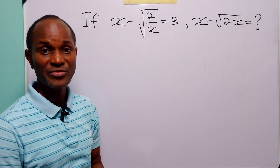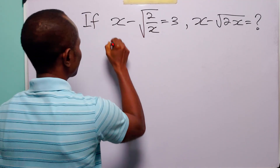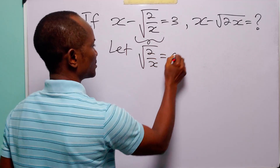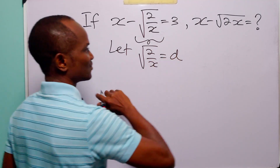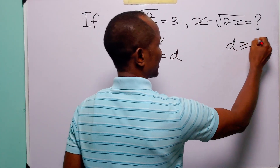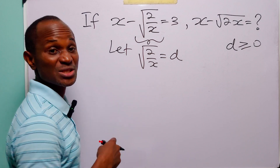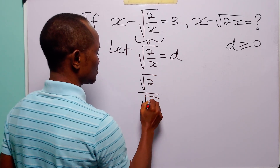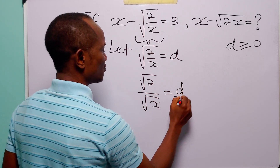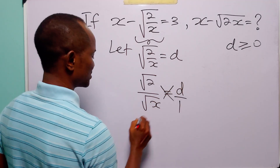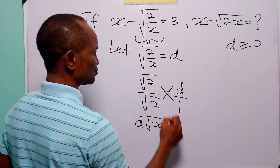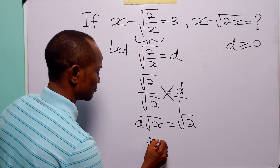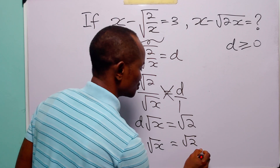To solve this equation, we are going to start with a simple substitution. Let this quantity — that is root 2 over x — be equal to d. This comes with the condition that d must be greater than or equal to 0, because a square root must be positive. We can write root 2 over x as root 2 over root x. So when we cross multiply, we have d times root x equals root 2, and dividing both sides by d gives us root x equals root 2 over d.